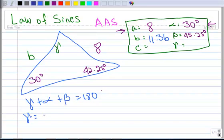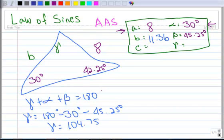So gamma plus alpha plus beta equals 180 degrees. So gamma is going to equal 180 minus 30 degrees minus 45.25 degrees. And when you do that, you get 104.75 degrees. So let's write that in our box here. 104.75 degrees.